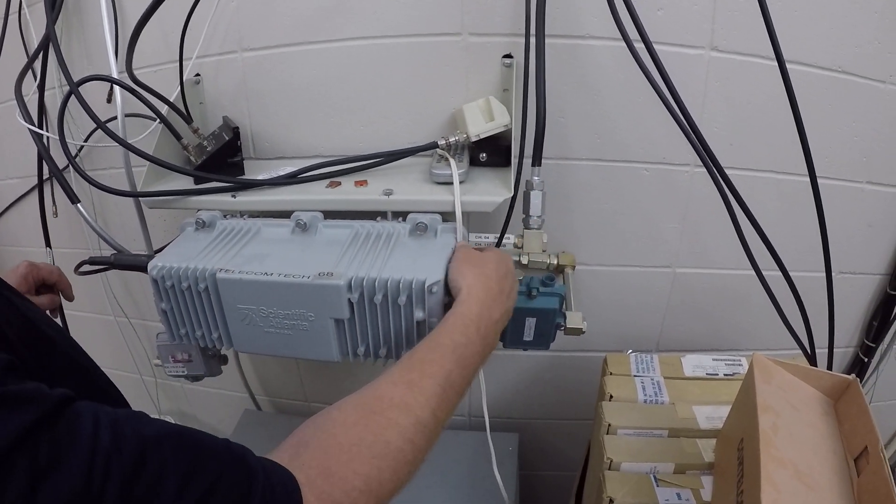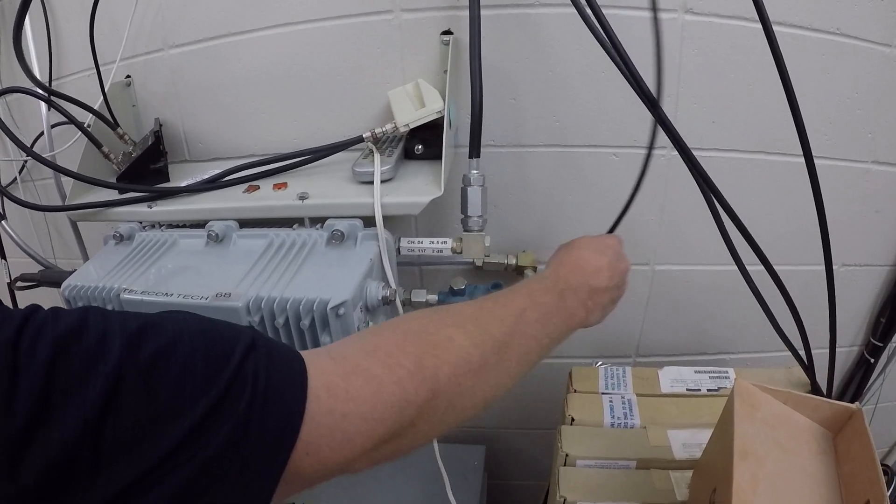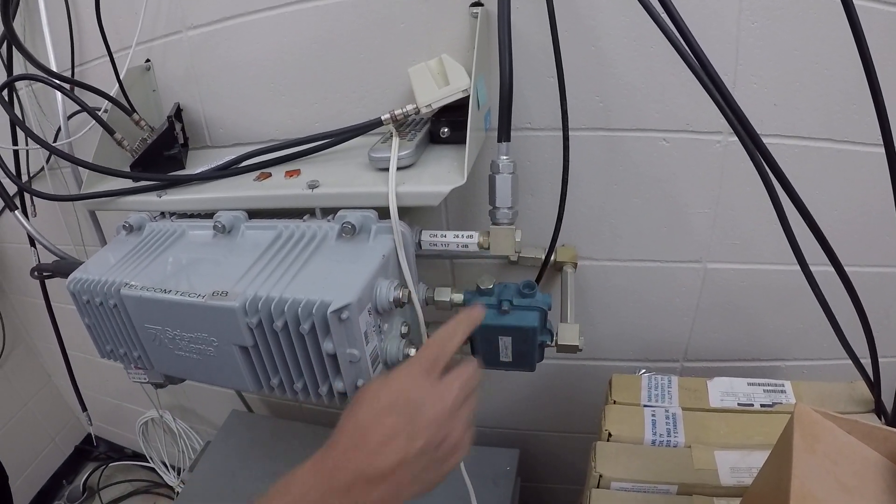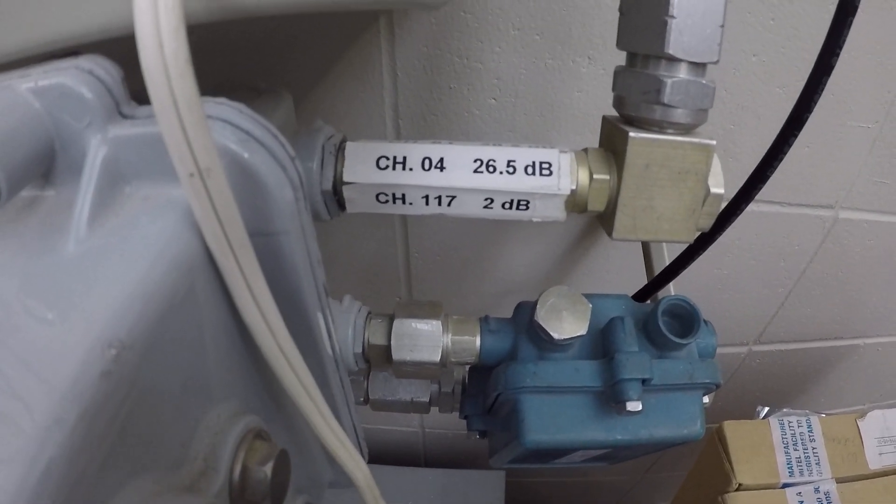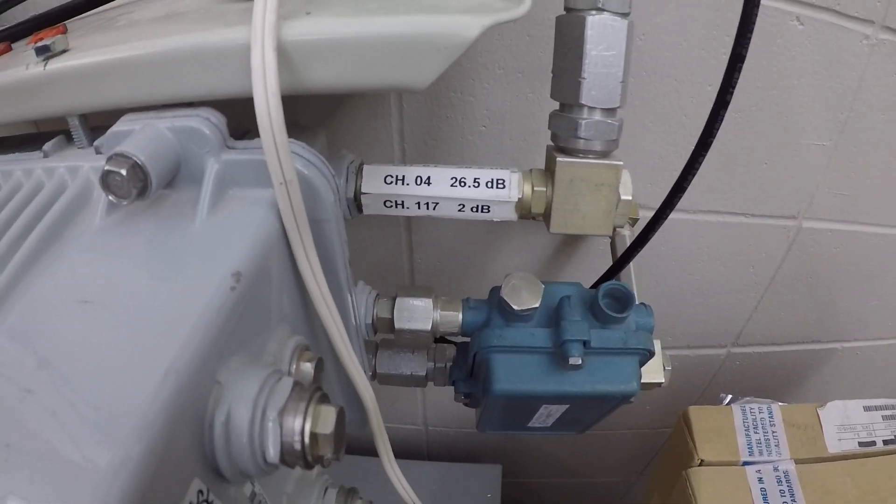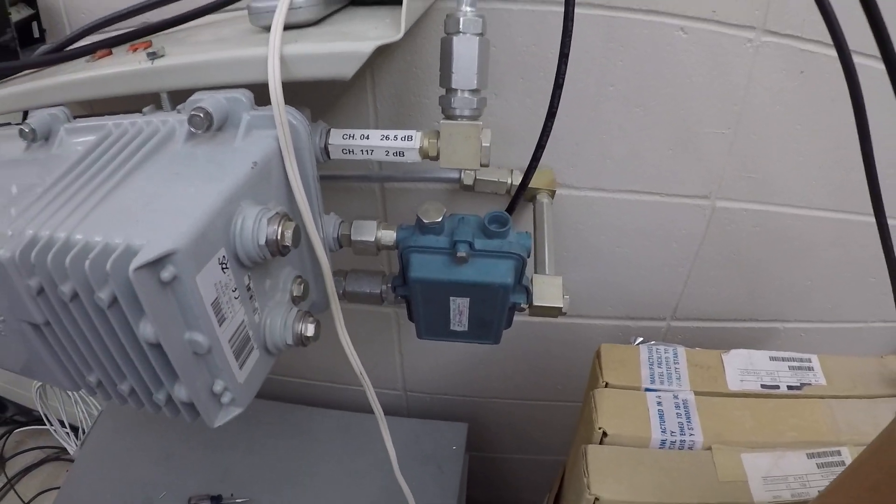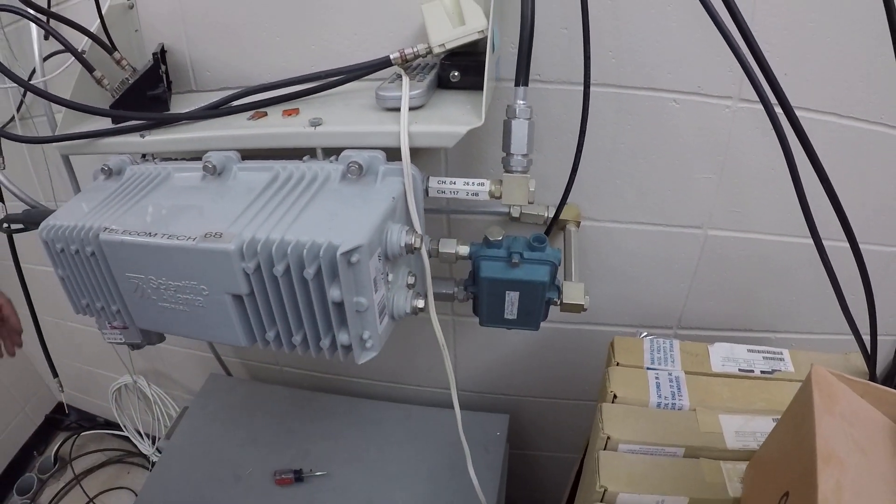So this is one output. We have some readings, document readings on here, DB signal levels, so that we know if the node is losing signal or we're having problems, we know what our reference point is off these readings.